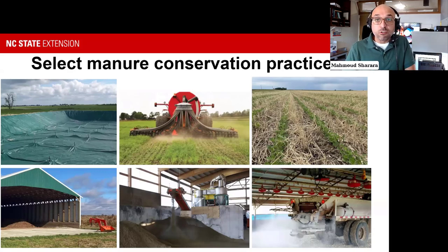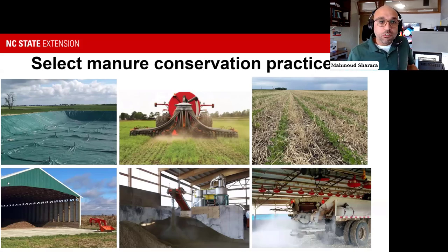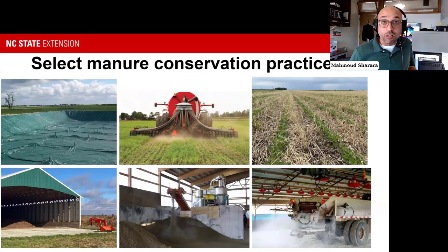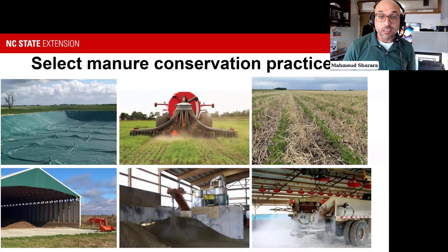Then you see an acidifier being applied into a poultry house, a solid-liquid separation, and on the lower left corner a manure storage shed for litter in particular. Depending on the management, that could be a composting facility designed as a covered structure.